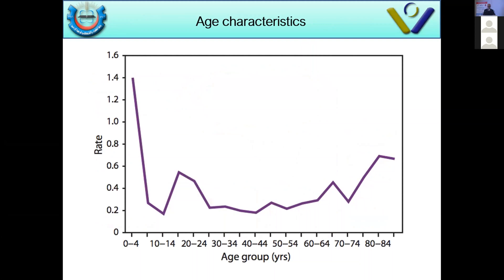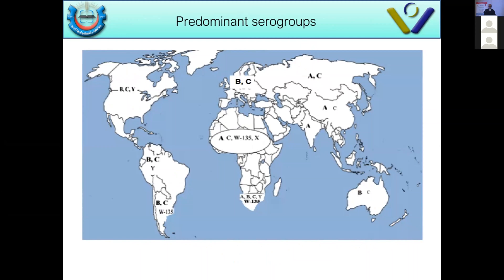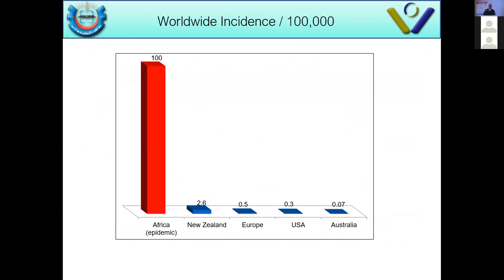Always remember the meningitic belt in Africa, where serogroup A is the most dominant strain. Looking at worldwide incidence, rates are much higher in Africa — up to 100 per 100,000 population during certain epidemics — compared to 0.07 per 100,000 in Australia. The incidence of meningitis differs completely between developed and developing countries.